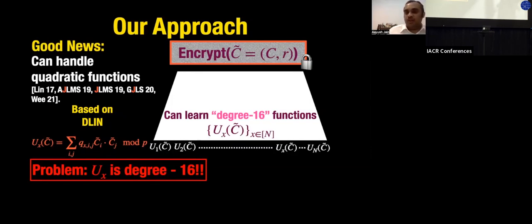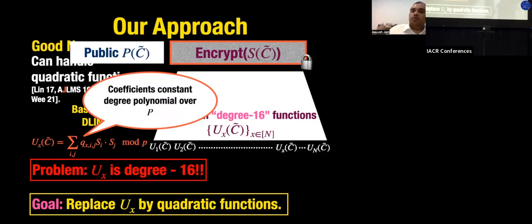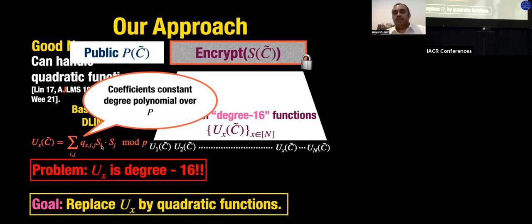We work in a different pre-processing model: we allow a public input. We pre-process C̃ into two components — a public component (which of course hides C̃ since it's public) and a secret component which we encrypt. The polynomial can be constant degree in the public component but only degree 2 in the secret. Using bilinear maps, you can build encryption schemes supporting computations of constant degree on the public part and degree 2 on the secret.